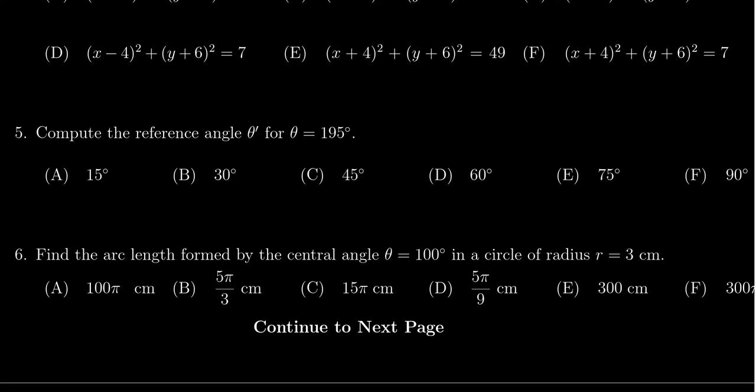A reference angle is always going to be in the first quadrant. It needs to be between 0 and 90 degrees if we're doing degree measure like we are in this question right here. So if you have 195 degrees,